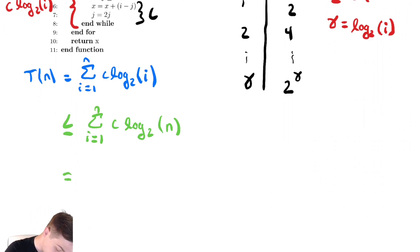So, this is equal to n copies of c log base 2 of n. Then, those two lines together are enough to tell me that we are in big O of n log of n.